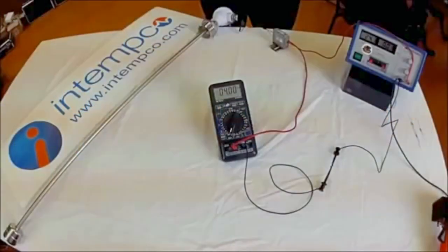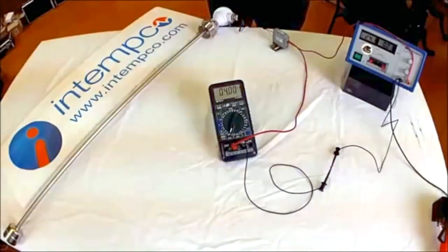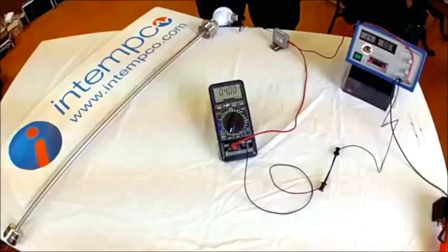This is a presentation from Intemco, a quality supplier of industrial and hygienic sensors. Today we are going to explain how a sensor uses a 4 to 20 milliamp current loop to indicate a measurement and how to troubleshoot these systems.